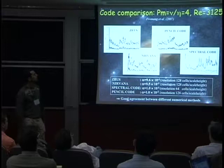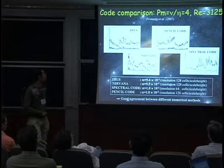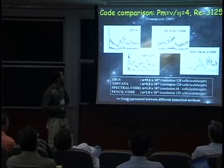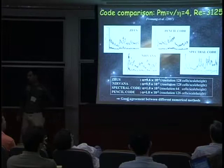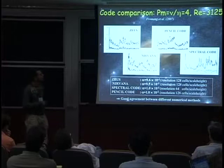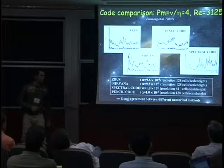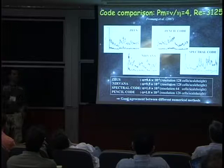To be more sure, we also made a code comparison — that's what we were discussing this morning. We used three different methods and four different codes: Pencil code, Nirvana, and Zeus, which are clones of each other, and a spectral code. We got the same value of alpha in all four methods, around 10^-2. Taken all together, these four methods suggest that numerical dissipation for this particular model is not dominant when looking at transport coefficients.